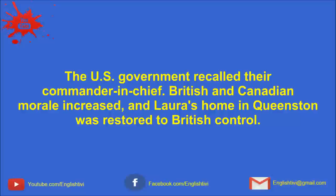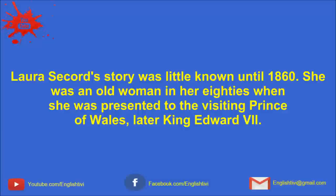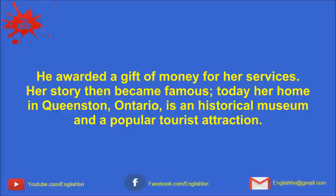The U.S. government recalled their commander-in-chief. British and Canadian morale increased, and Laura's home in Queenston was restored to British control. Laura Secord's story was little known until 1860. She was an old woman in her 80s when she was presented to the visiting Prince of Wales, later King Edward VII. He awarded a gift of money for her services. Her story then became famous. Today, her home in Queenston, Ontario, is an historical museum and a popular tourist attraction.